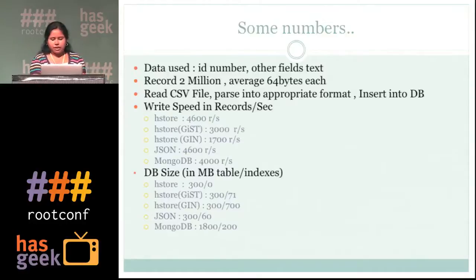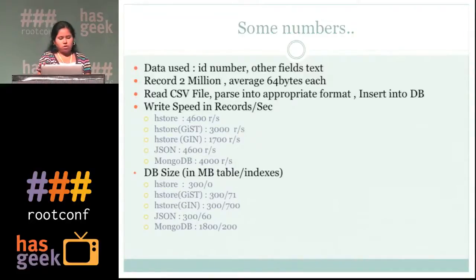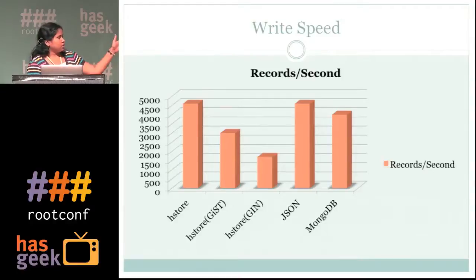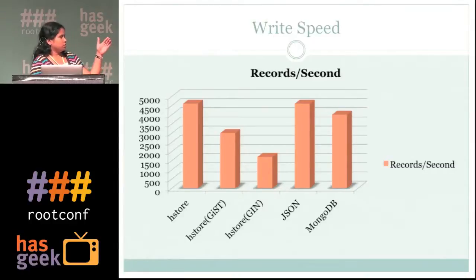Here is some testing I did to show we could go with this approach. I created a CSV file with 2 million records on a normal laptop with 8 GB RAM. PostgreSQL and MongoDB were both installed there. The first thing tested was write speed. Looking at the graph for 2 million records — records per second being inserted — there was normal HStore, HStore with GiST index, HStore with GIN index, JSON, and Mongo with index on primary key. GIN was the slowest in the insertion part.